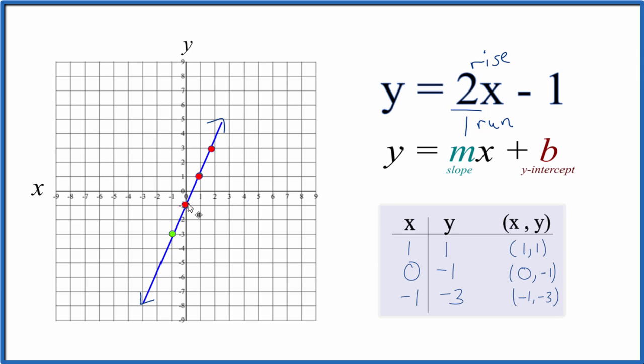You can also go in the opposite direction. Down 1, 2, over 1. Down from there, 1, 2, over 1. So that's how you use slope-intercept formula.